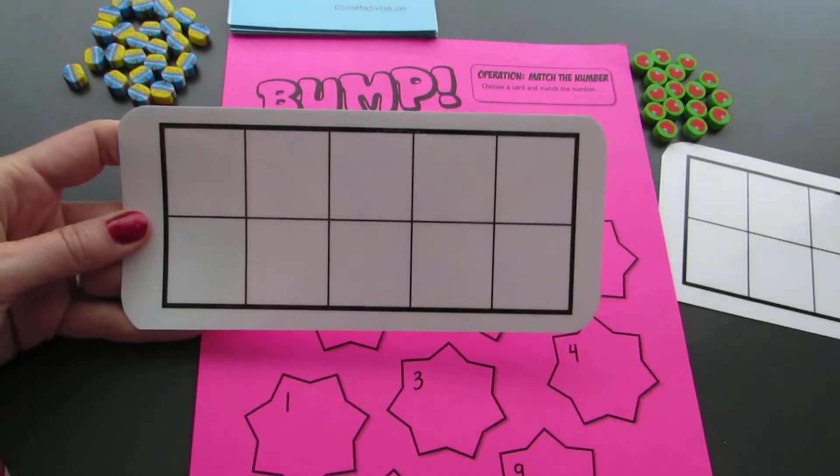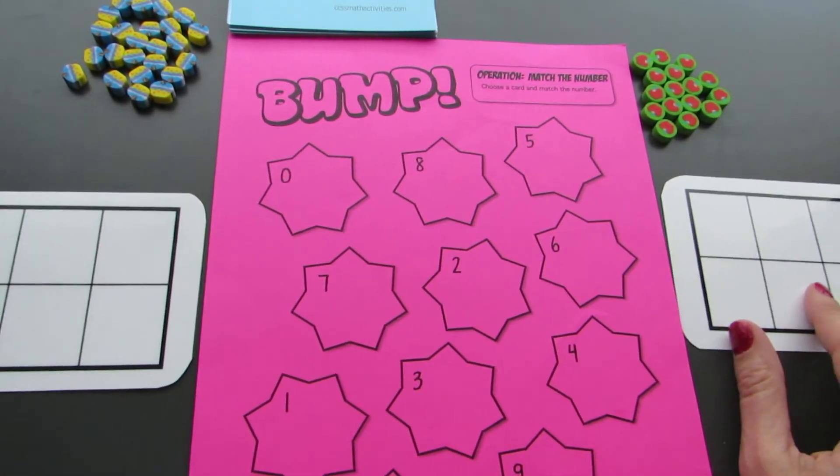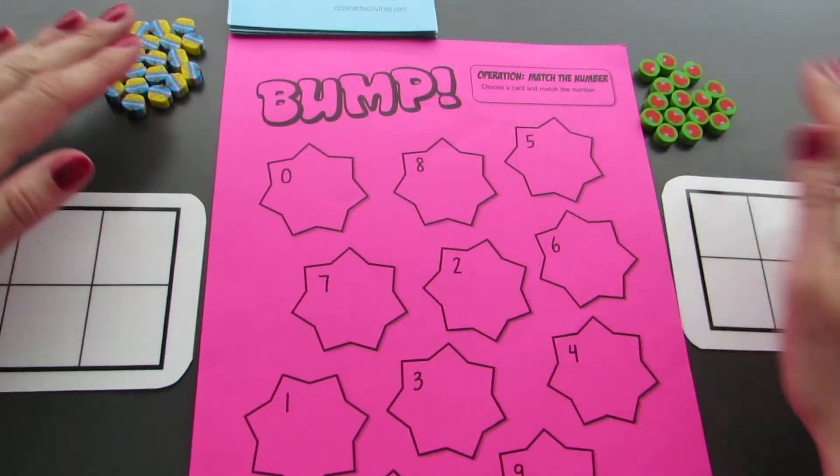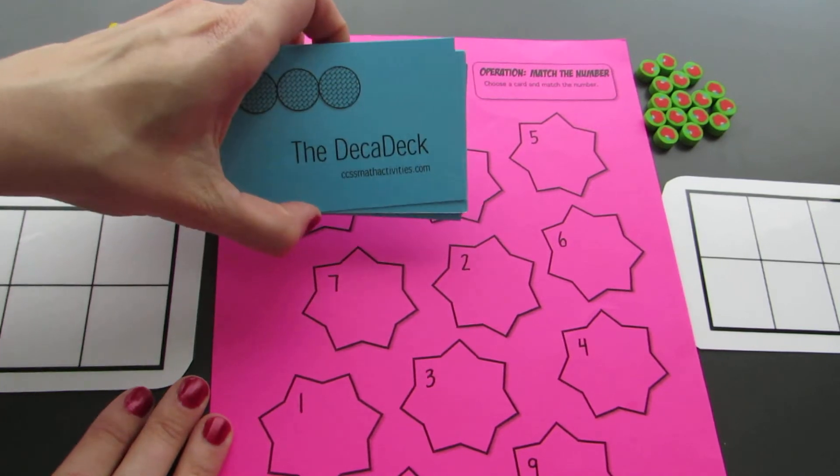We need two 10 frames, one for me and one for you. Those are kind of to keep score. We need a few kinds of counters. I have cupcake erasers here and you have apple erasers. And we're using a Decadec today.